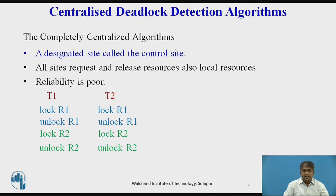At this point, S1 reports its status T2 to T1 to a designated site. Thereafter, T1 unlocks R1, T2 locks R1, T1 makes a lock R2 request to S2, and T2 unlocks R1 and makes a lock R2 request to S2. Suppose that the lock R2 request of T2 arrives at S2 and locks R2, followed by the lock R2 request of T1 which waits at S2. At this point, S2 reports its status T1 to T2 to the designated site, which after constructing the global wait-for graph reports a false deadlock: T1 to T2 and T2 to T1.